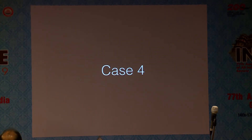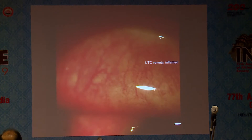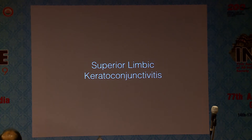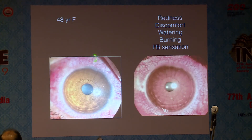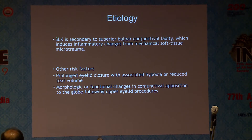Coming to the fourth case: a 48-year-old female presenting with discomfort, redness, discharge in both eyes, burning sensation, and foreign body sensation. On everting the lid margin, the upper tarsal conjunctiva was red, velvety, and inflamed. The superior conjunctiva was more congested, and a diagnosis of superior limbic keratoconjunctivitis was made. The etiology is secondary to superior bulbar conjunctival laxity, which induces inflammatory changes from mechanical soft tissue microtrauma. Risk factors include prolonged eyelid closure with hypoxia and functional changes following upper eyelid procedures.